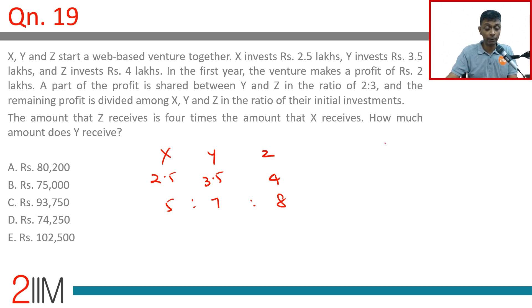the venture makes a profit of 2 lakhs. A part of the profit is shared between Y and Z in the ratio 2:3. The remaining is shared between X, Y, and Z in the ratio of their initial investments. So one part is divided between X, Y, and Z in